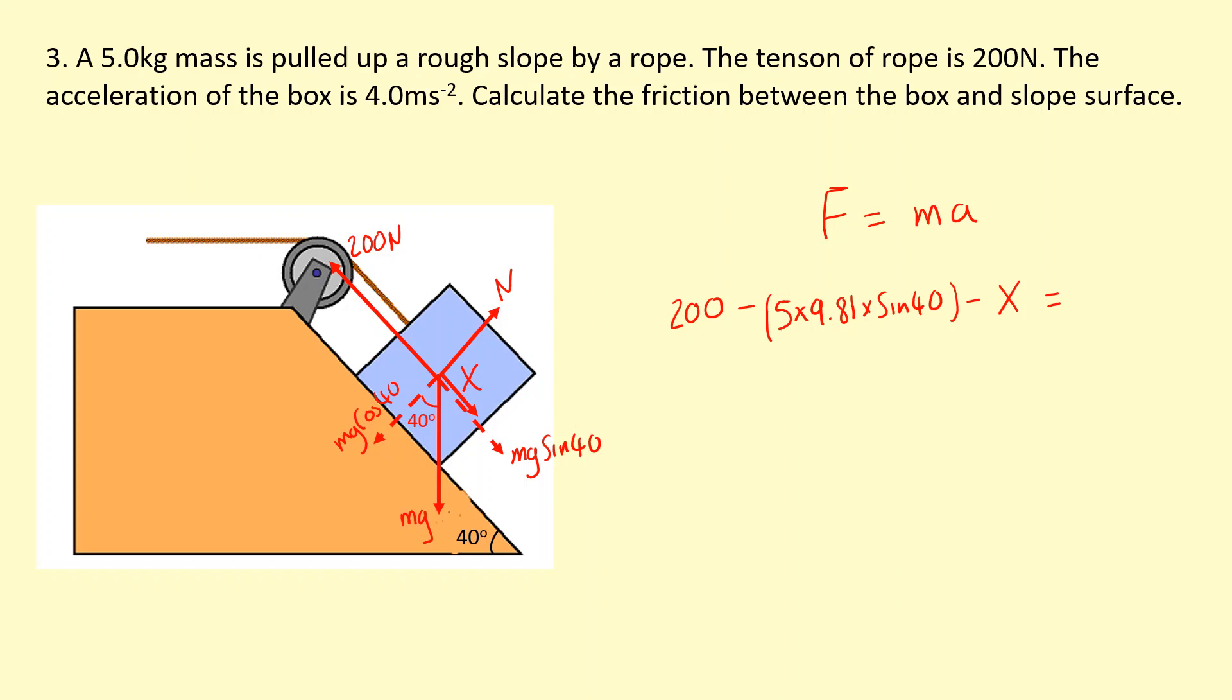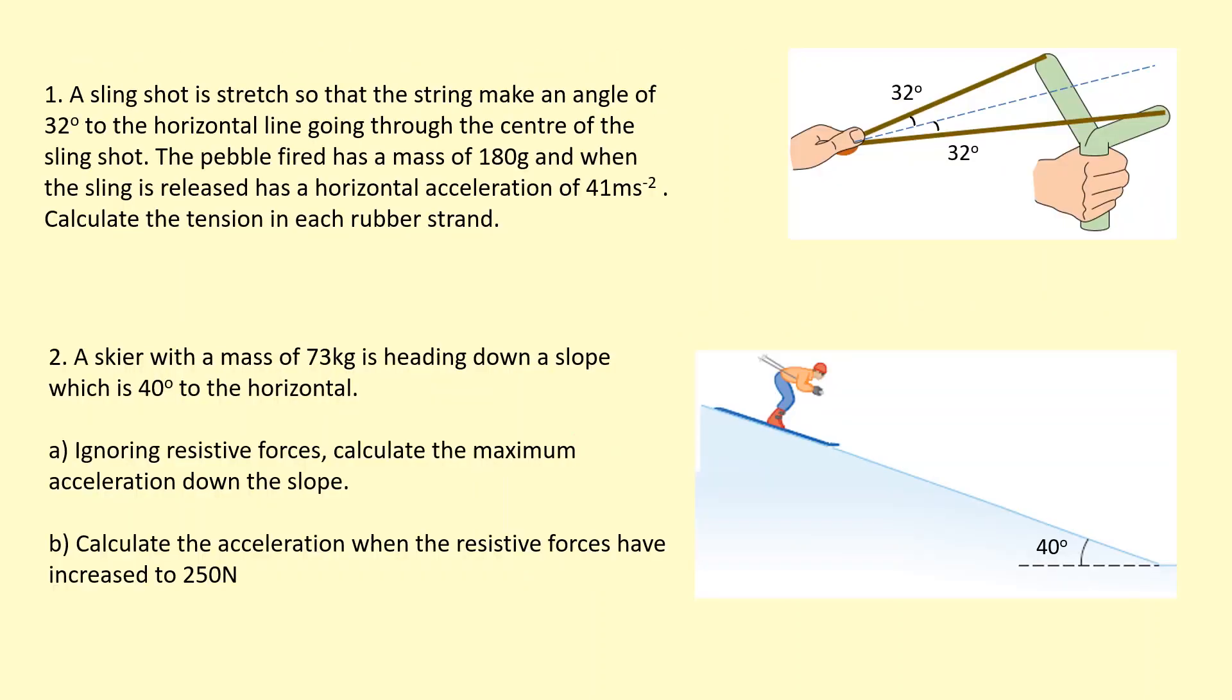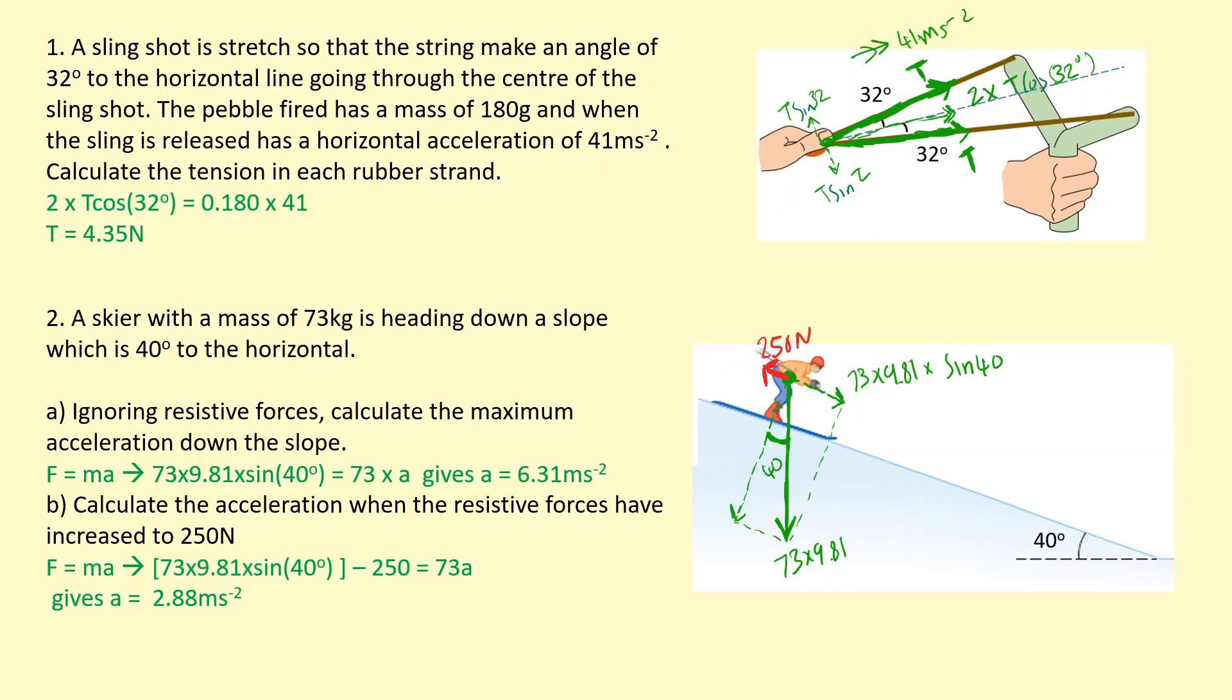M being 5, and A being 4. So if we rearrange this and solve for X, we should get 148 Newtons.